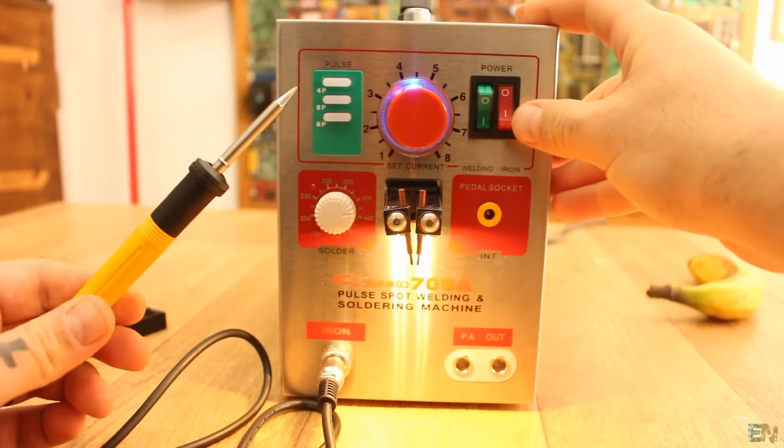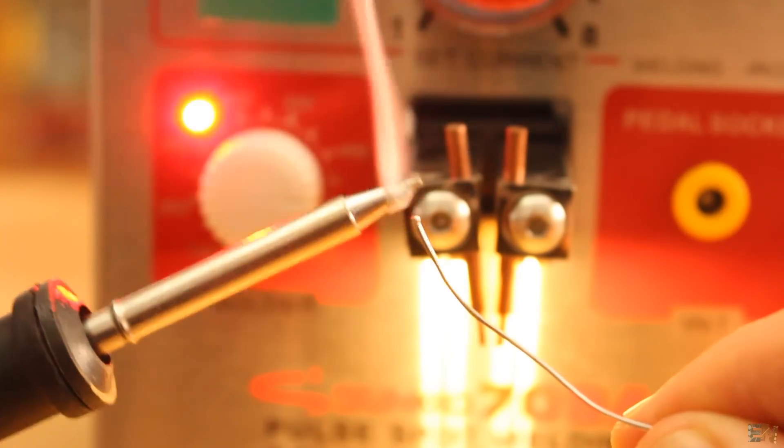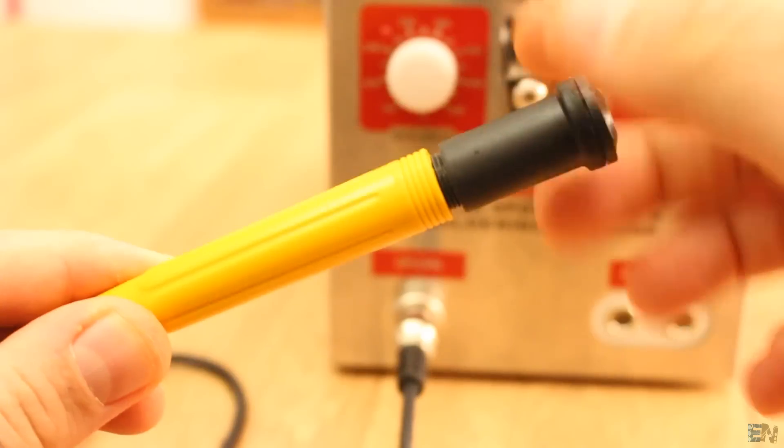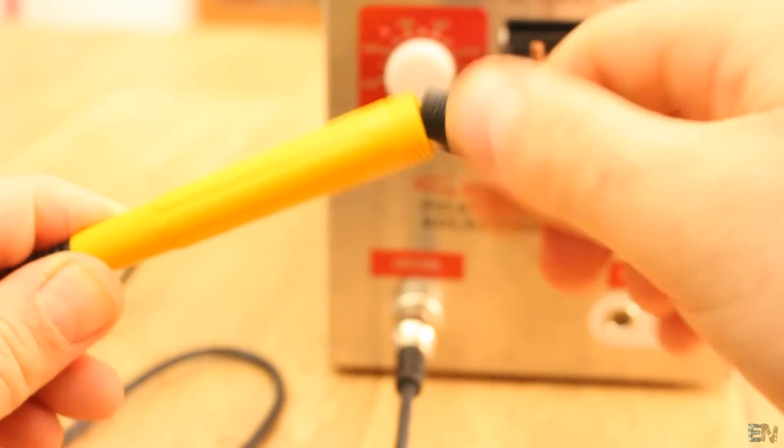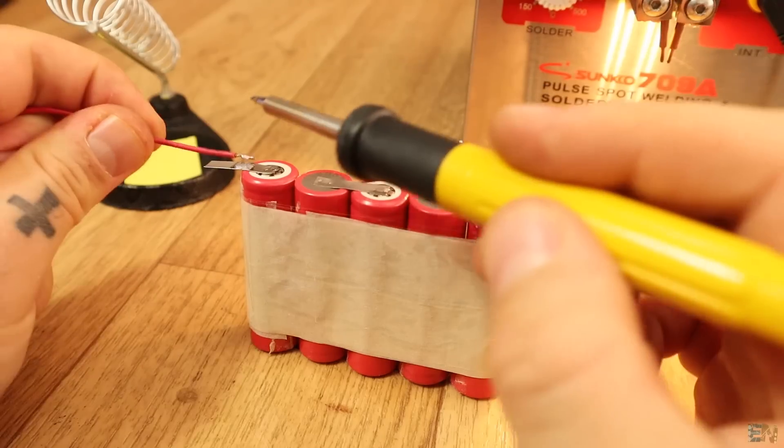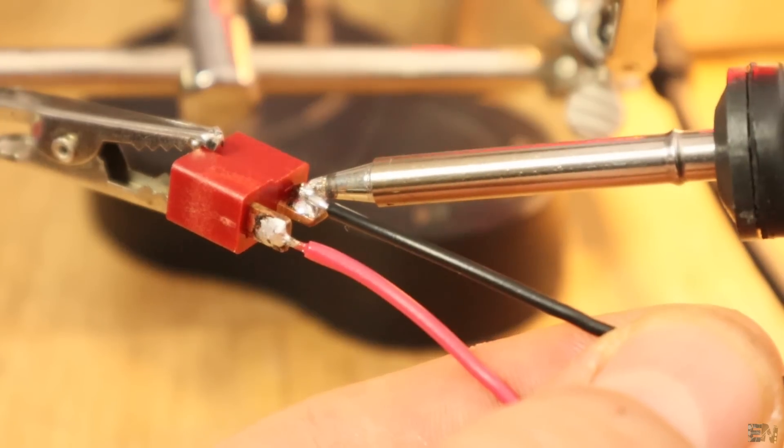As for the soldering iron, well, it's a T12 tip with variable temperature. The actual iron is kind of crappy and made out of cheap plastic, but for the price of the unit, that was expected. But in overall, it works very well, so if you don't have a soldering station, well, this one includes that too.